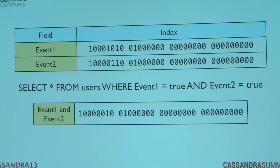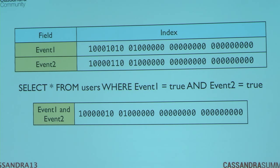If I want an intersection — an AND clause — to find all users that have triggered event one AND event two, I do the intersection: the ones have to be lined up in both bit vectors. Right there I've got the basis of Boolean algebra — I've got AND, OR, XOR. I just have to figure out more creative ways of encoding problems in these bit vectors.